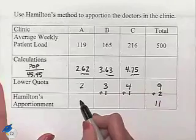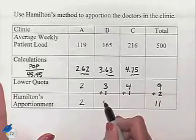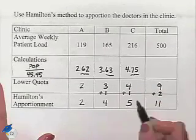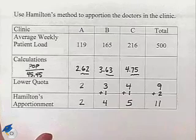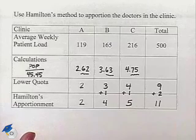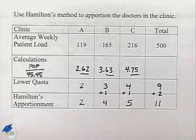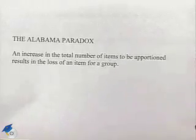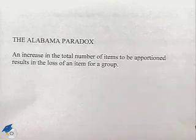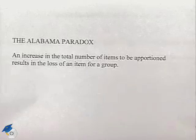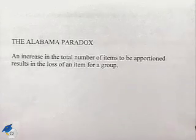That's going to give the apportionment as 2, 4, 5. Now the next part of the problem was to try to determine whether or not this would give us the Alabama paradox. An increase in the total number of items to be apportioned, as we saw in this case, results in the loss of an item for a group.